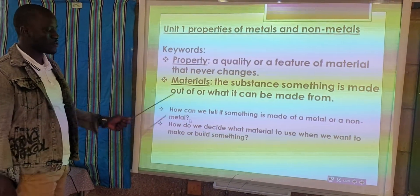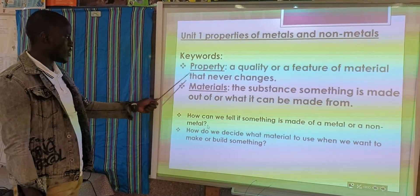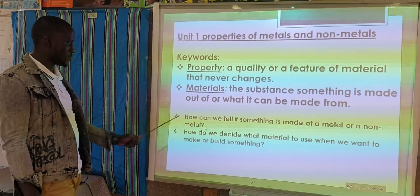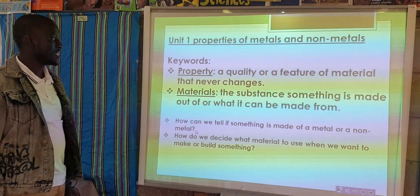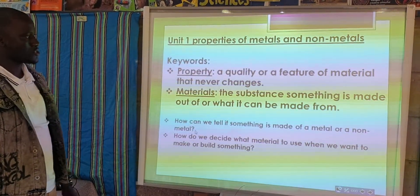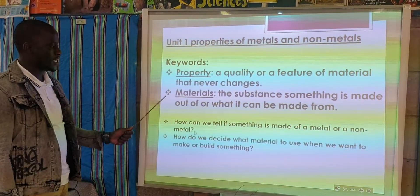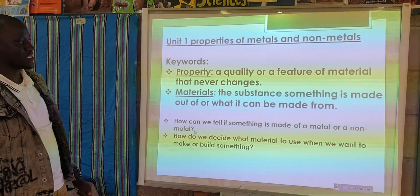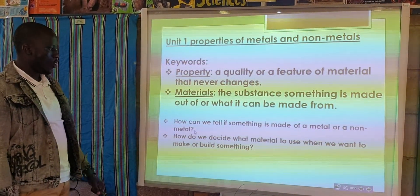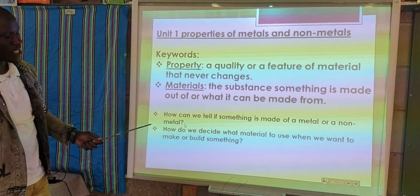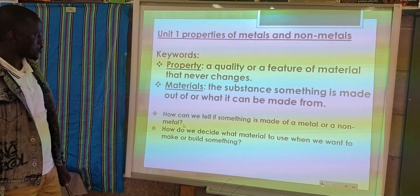So firstly, I want to familiarize you with keywords. The first one is property, and the second one is materials. Property is a quality or a feature of a material that never changes. And materials — the substance something is made out of, or what it can be made from.